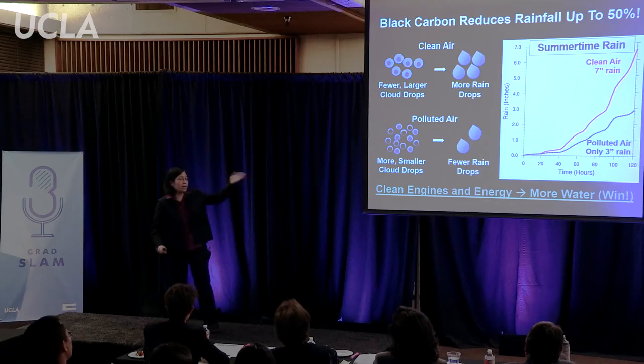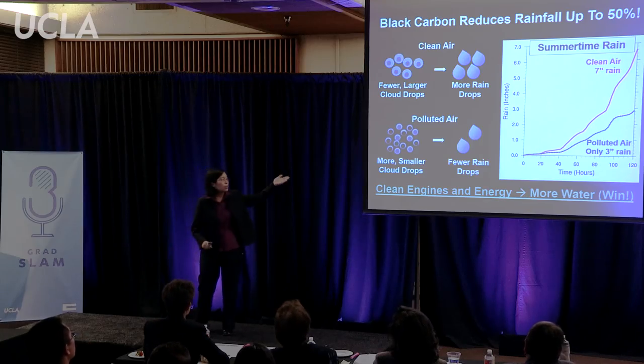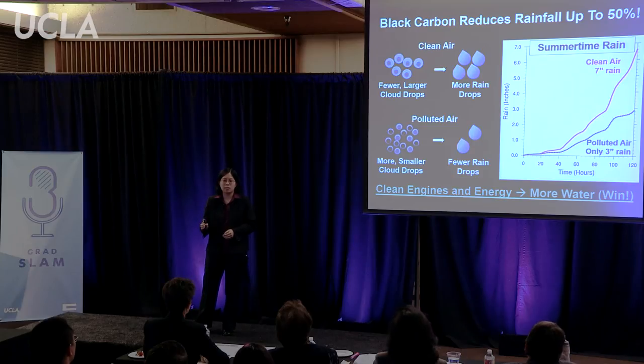We used an updated and region-specific black carbon dataset coupled with a state-of-the-art weather model — like a souped-up version of the weather models that television meteorologists use — to study rainfall. In doing so, we found that black carbon can actually reduce rain by up to 50 percent in the summer months.